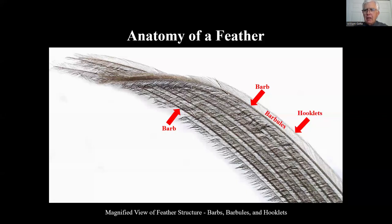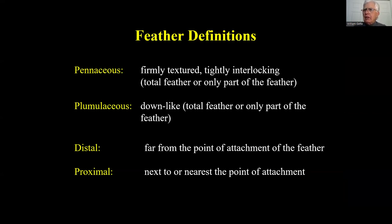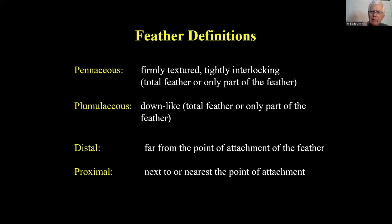In terms of feather definitions: pennaceous feathers are finely textured and tightly interwoven — this can apply to the entire feather or just portions of it. Plumulaceous is the downy part — like feather down — and again can apply to a portion or the entire feather. Distal means away from the point of attachment, toward the tip; proximal means nearest to the body and feather follicle. These are terms we'll use going forward.